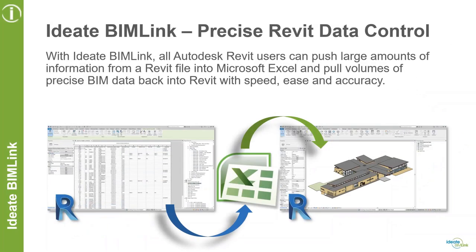We are here to talk about ID8 BIMLINK and MEP workflows. ID8 BIMLINK is all about precise Revit data control. BIMLINK allows you to extract information from the Revit model — all the parameters, all the data within BIM — and send it to Excel for either review purposes or modification. And if you do modify it, you can round-trip it and import it back into Revit to update the model.